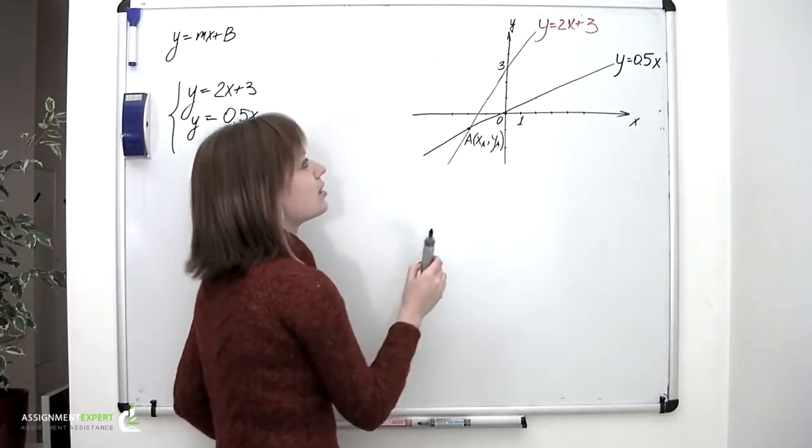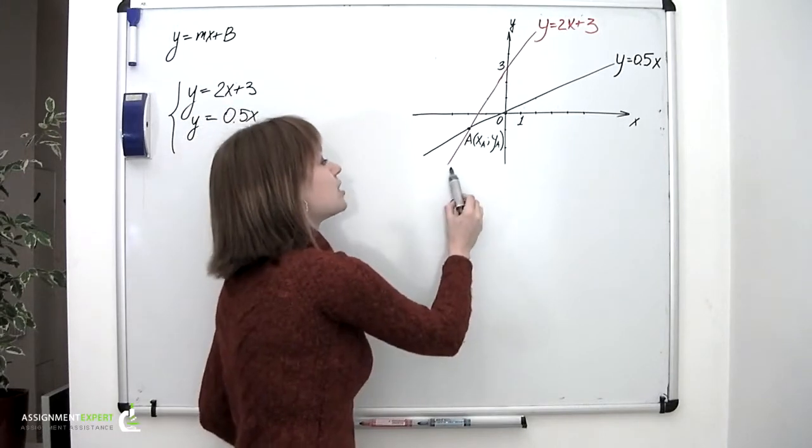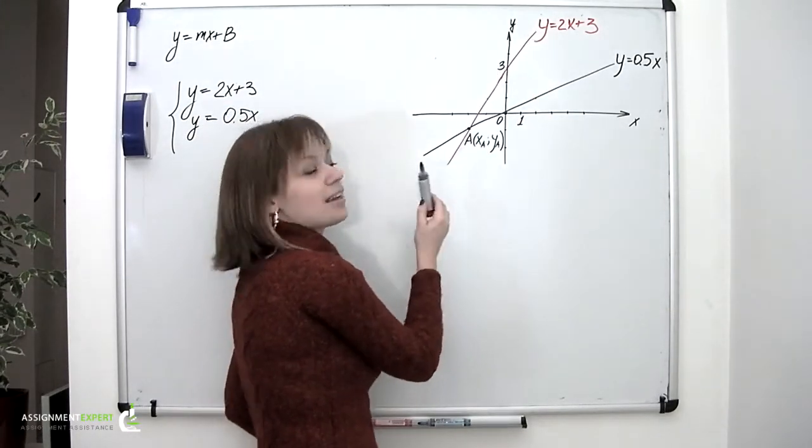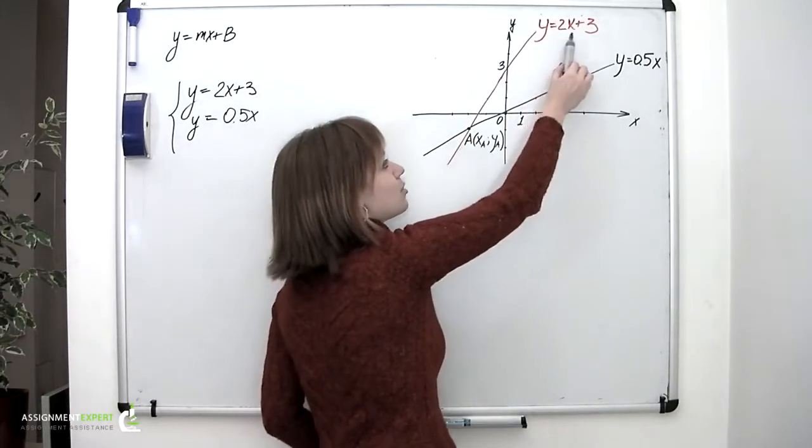So the red line is represented by an equation y equals 2x plus 3, which means that in order to define the y coordinates of the points lying on this line, you would have to take an x coordinate, multiply it by 2 and then add 3.